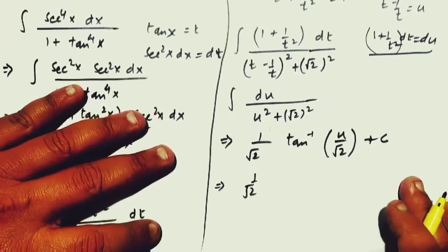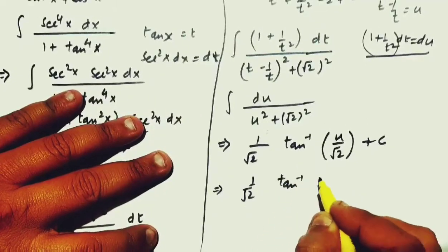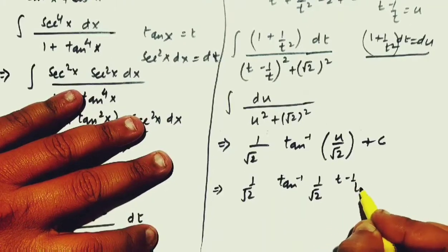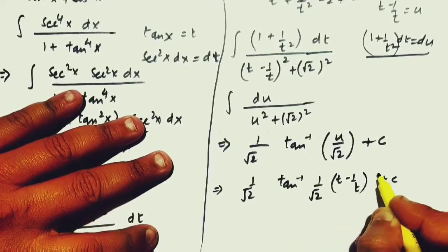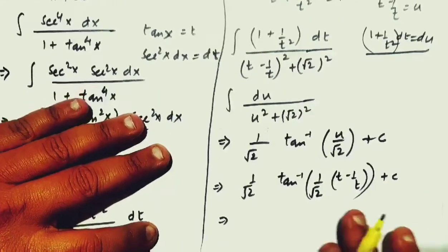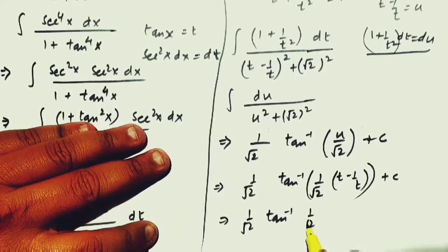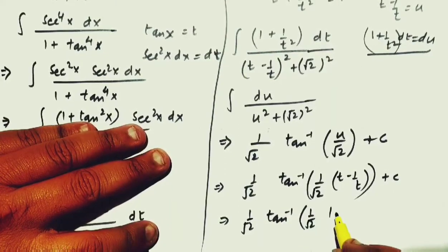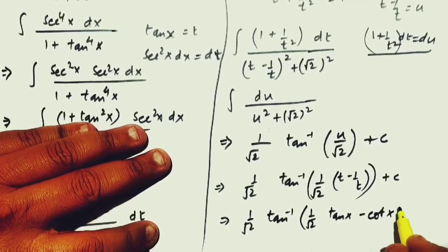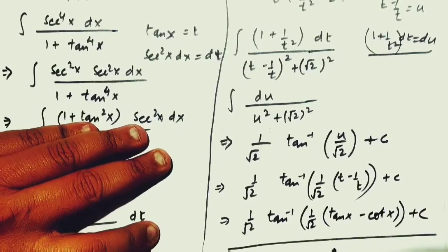So, 1 by root 2. Now, I will substitute u as t minus 1 over t. So, it will be tan inverse 1 over root 2, and this will be t minus 1 over t plus c. I will write t as tan x, therefore 1 by root 2 tan inverse 1 over root 2, and this will be tan x minus cot x, because 1 upon tan x is cot x. Therefore, I will get this one plus a constant of integration.